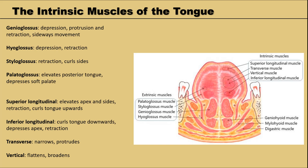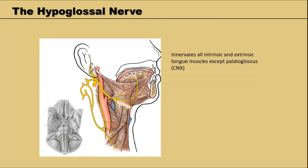The transverse fibers are part of the crosshatch arrangement and narrow the tongue for protrusion — when we try to make the tongue long and skinny as we stick it out, we engage these transverse fibers. The vertical fibers do the opposite: they flatten and broaden the tongue. The hypoglossal nerve — cranial nerve 12 — comes directly from the brain rather than the spinal nerves and innervates all of the intrinsic and extrinsic muscles of the tongue except the palatoglossus, which as we discussed is innervated by the vagus nerve, cranial nerve 10.